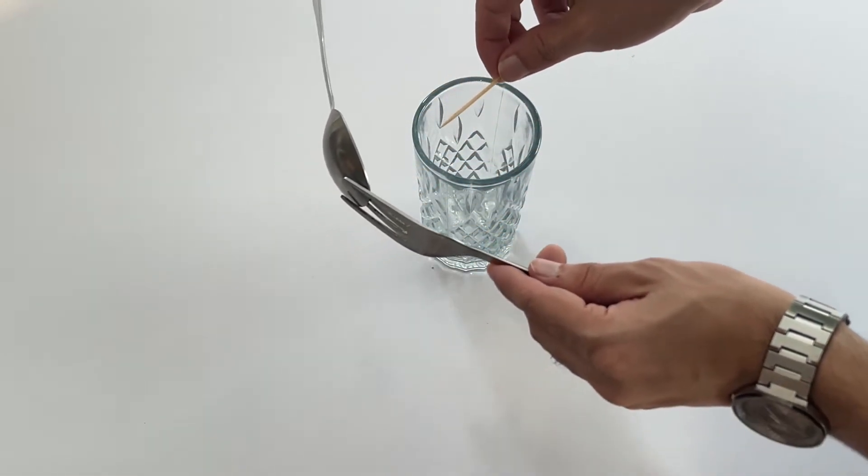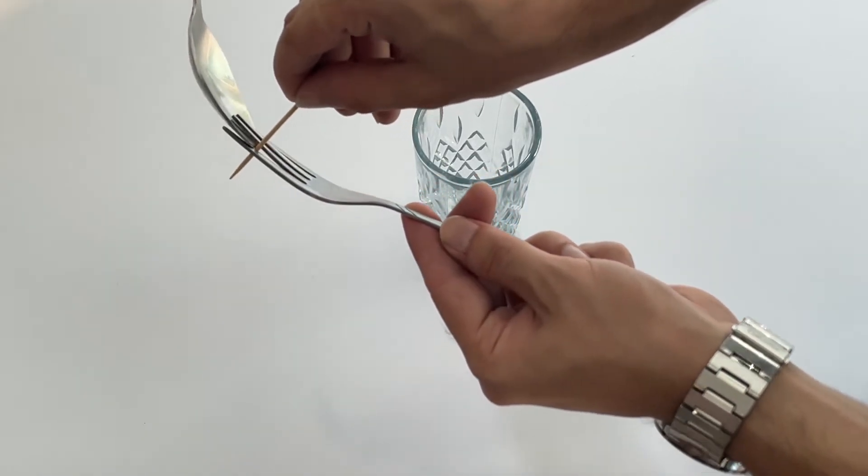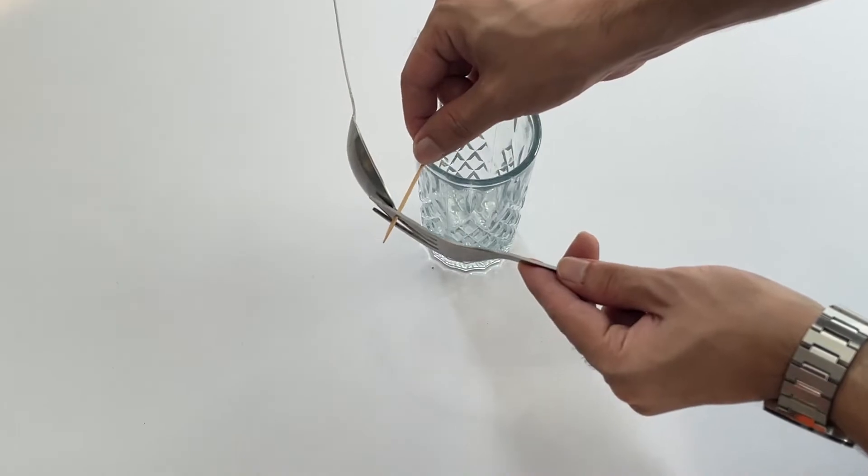Now insert the toothpick into the fork by resting the other end of the toothpick on the rim of the glass. It may take you some time to do so.